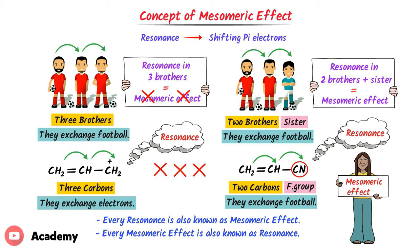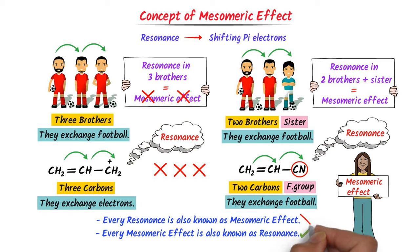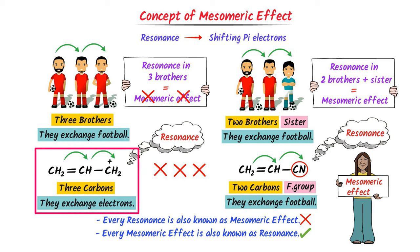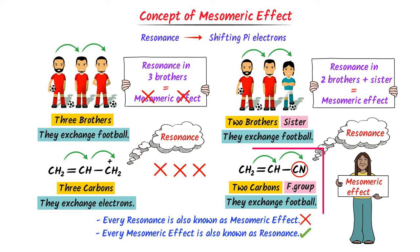Can you guess which statement is correct: every resonance is also known as mesomeric effect, or every mesomeric effect is also known as resonance? Well, every mesomeric effect is also known as resonance. For example, here there is resonance but not a mesomeric effect, while in the other case this is mesomeric effect as well as resonance.